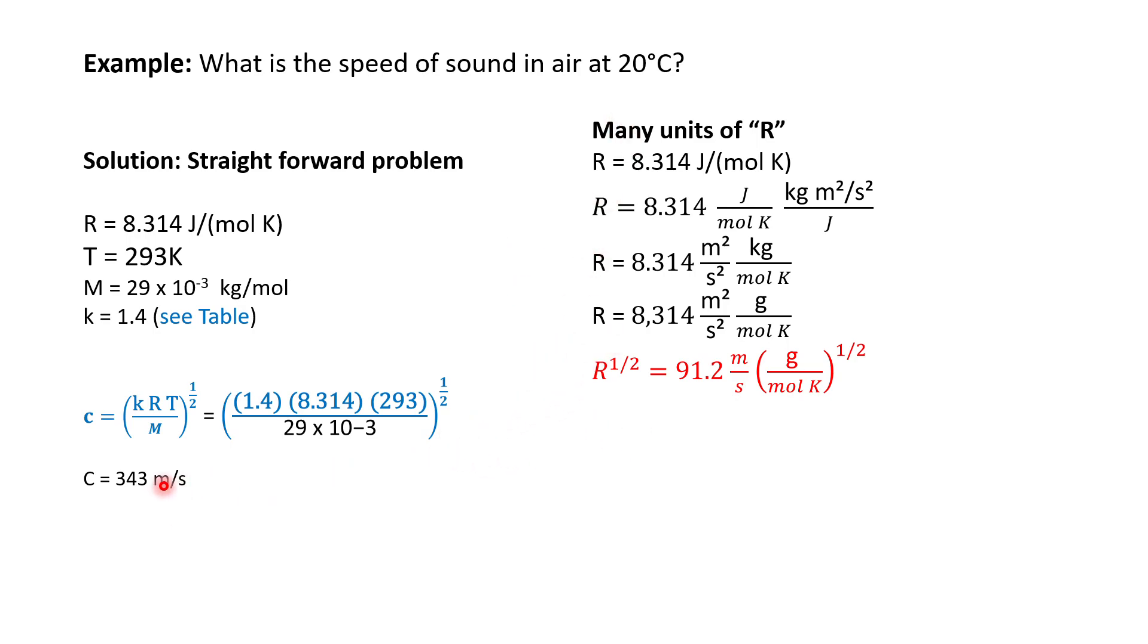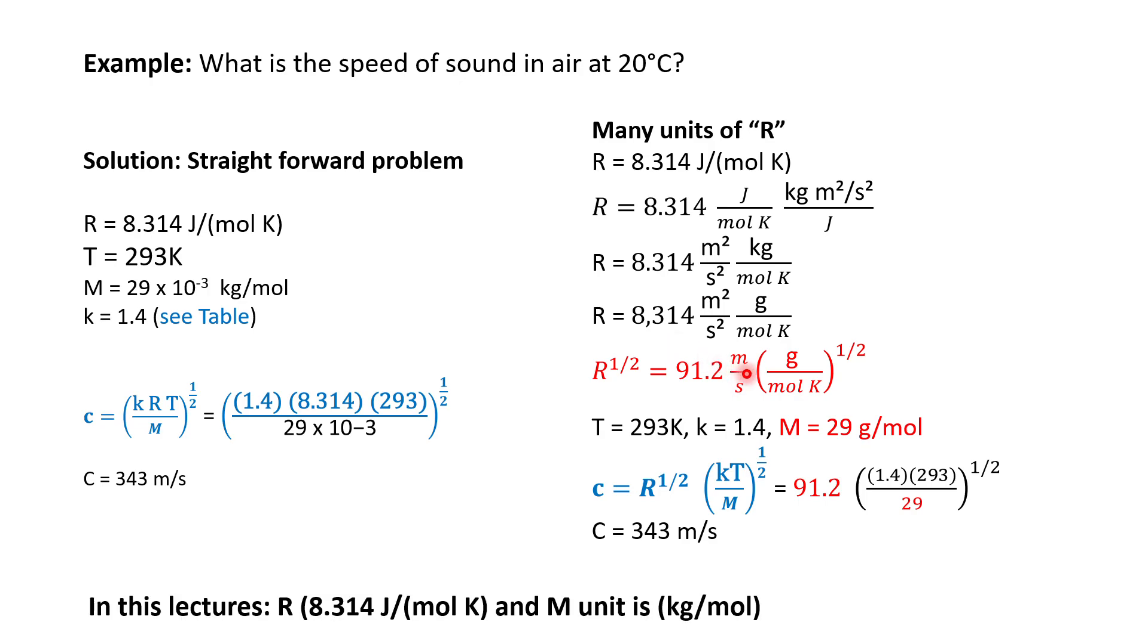Here I try to illustrate what is the impact of R. In this equation, the square root of R is actually equal to 91.2 meters per second, and this is the additional unit. In this example, I just want to show you how we can get the unit of meters per second from the square root of R. I want to remind you again that R is always constant, and then the unit of M is in kilogram per mole.